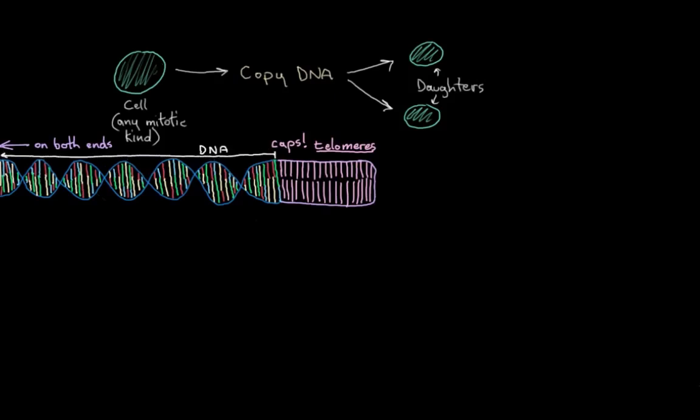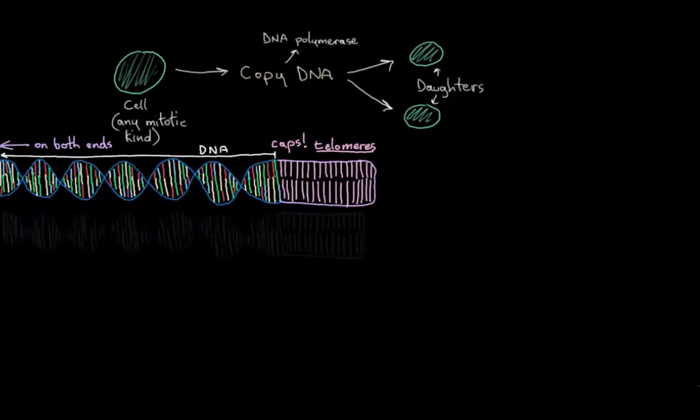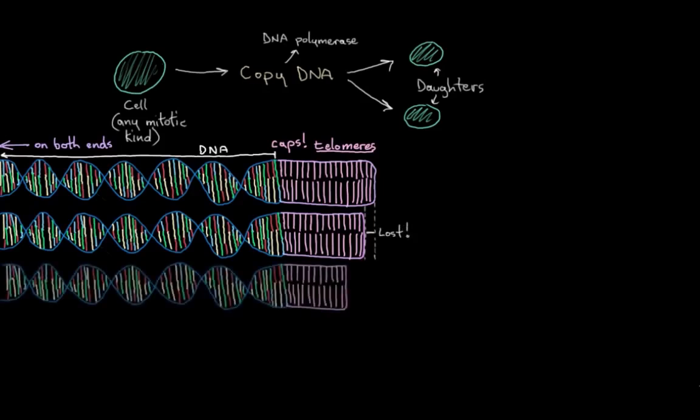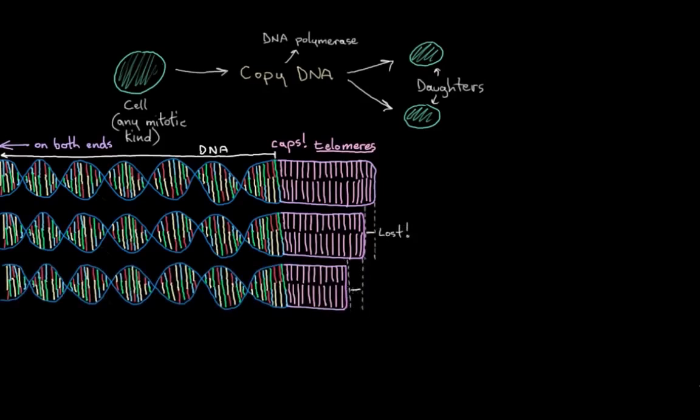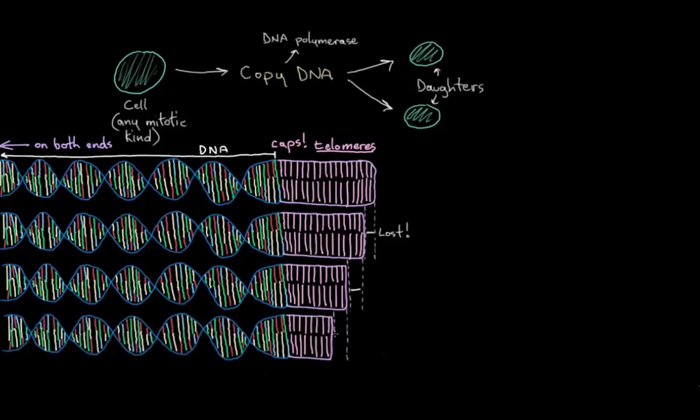I said that there's potential DNA damage during the copying process. The machinery that copies our DNA, our DNA polymerase system, it works in a funny way. It doesn't actually copy our DNA all the way to the end. So each time DNA is copied, you lose a little bit of telomere. Every time the DNA gets copied, you lose a little bit more and a little bit more of the end.